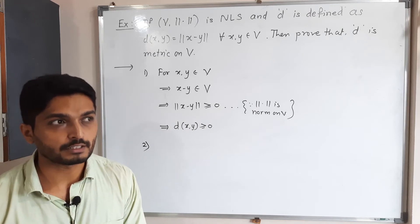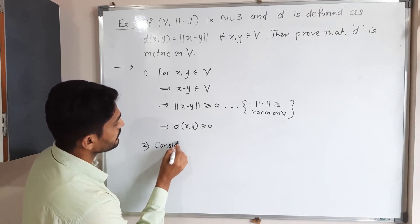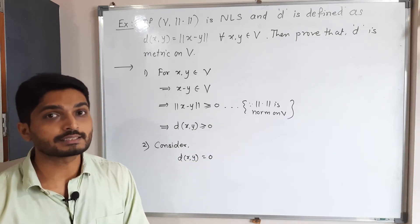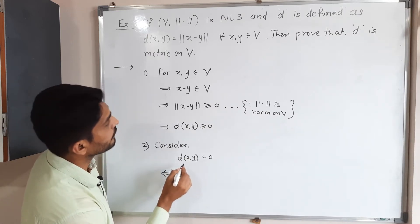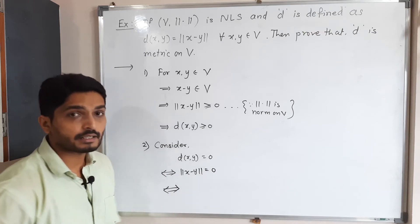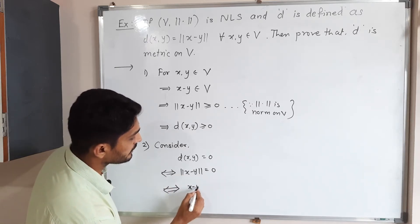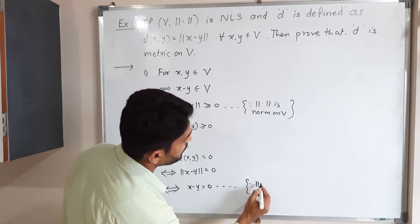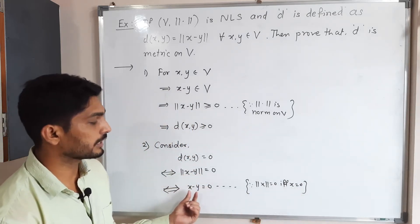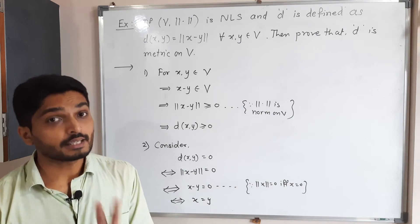For the second condition of a metric: D(x, y) = 0 if and only if x = y. We start with D(x, y) = 0. By definition, this means norm of x minus y = 0. By the second property of norm, norm of x = 0 if and only if x = 0. So norm of x minus y = 0 implies x minus y = 0, which means x = y. So the second property is proved.